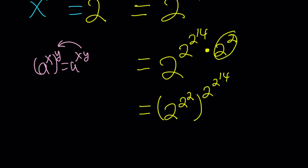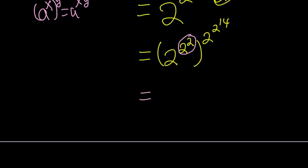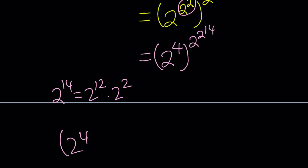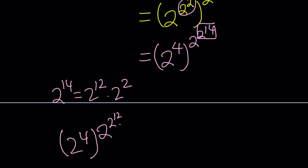So now we have 2 to the fourth power, 2 to the power, 2 to the power, 2 to the power 14. We break down 2 to the 14 again: it can be written as 2 to the 12 times 2 to the second. Keep 2 to the fourth at the base, and write this as 2 to the fourth to the power 2 to the power 12. When you multiply 4 times 2 to the 12th, you get exactly the needed expression.